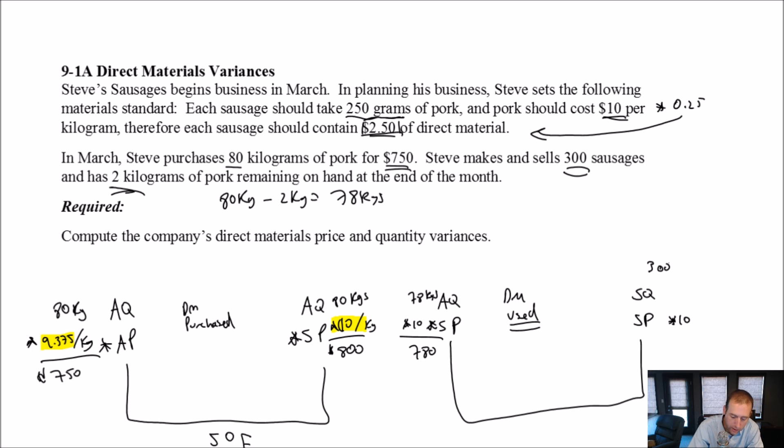How many kilograms ought he have used? Well, we know sausages are supposed to take 250 grams of pork, or 0.25 kilograms of pork. To make 300 sausages, 300 times 0.25 is 75 kilograms. To make those sausages, Steve should have used 75 kilograms. 75 times 10 is 750.